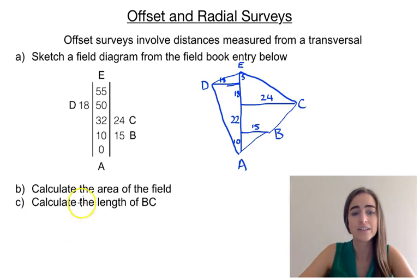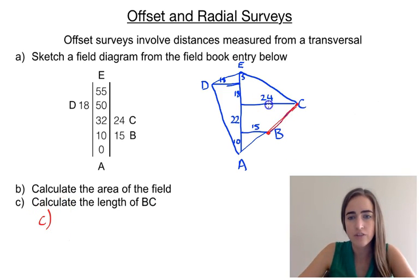Part C then asks us to calculate the length of the side BC. So that's from here to here. We're calculating that length, the length of that side there. So to do that, we're going to make this triangle.